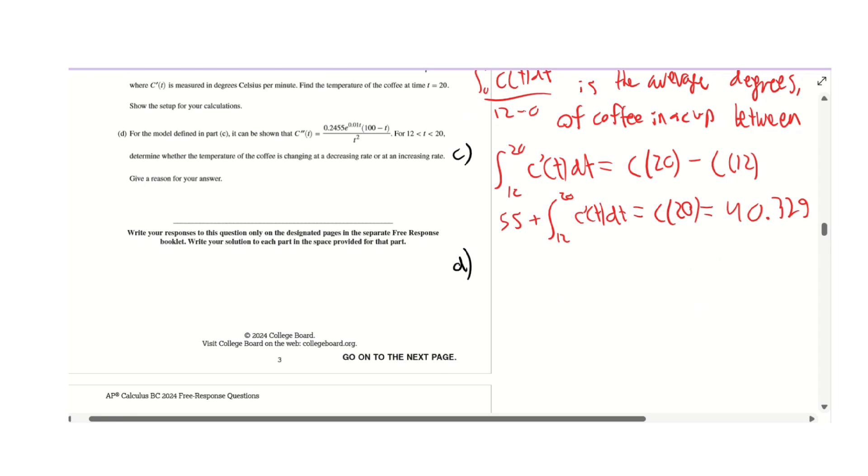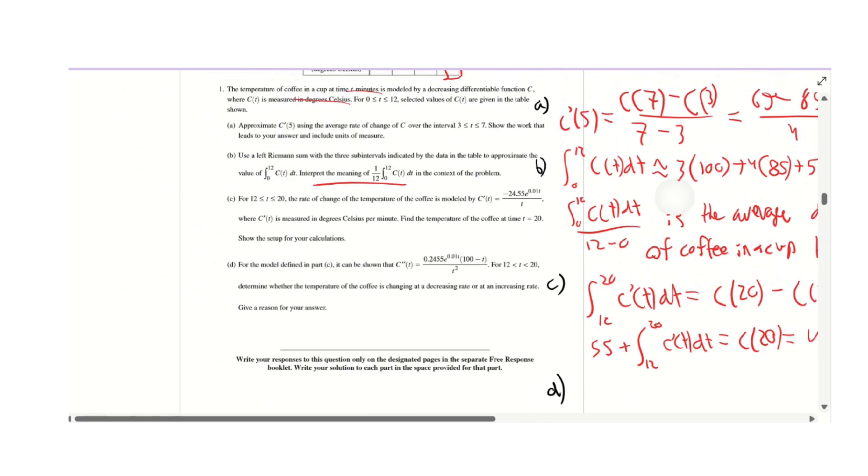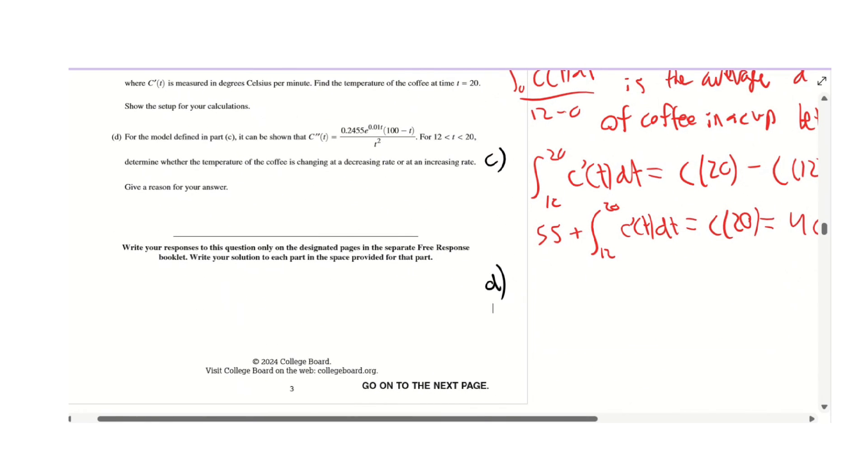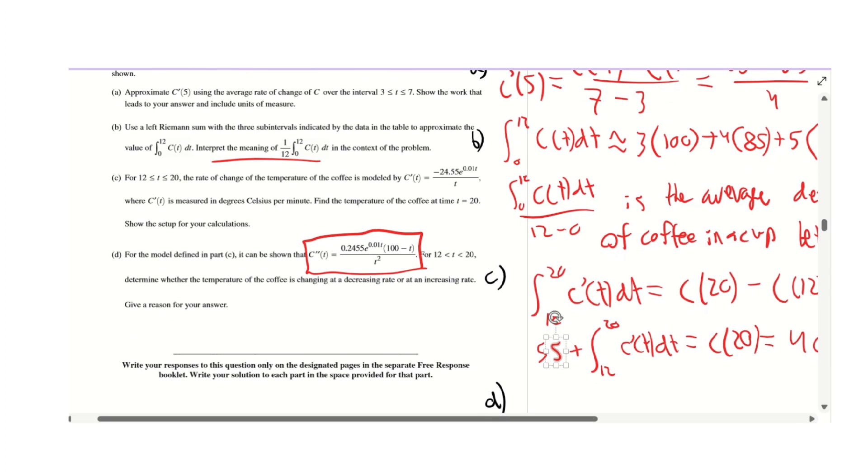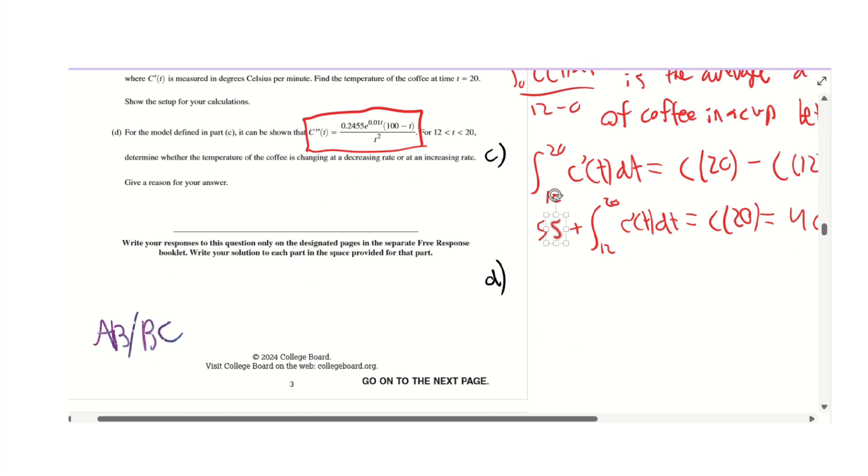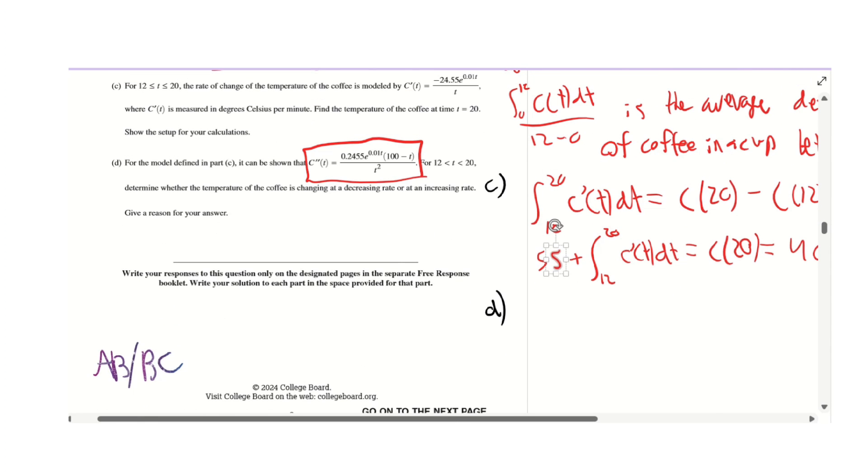Part D gives you the second derivative. This is an AB/BC shared question. This one had a lot of controversy, especially in my school. I thought I said decreasing on the test, whereas it actually is increasing. All you have to do, you don't even need a graphing calculator for this, all you need is the second derivative formula which it gives you.